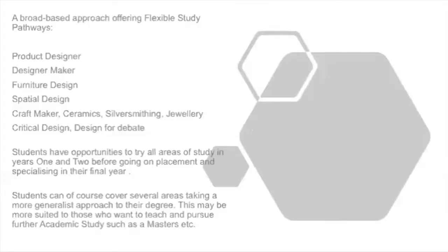The course itself is quite broad-based and we offer a flexible approach to study pathways. You come on the course in first year and you really don't know very much about design, so first year is very much like a foundation. We allow you to experiment with a number of different disciplines through short, quick projects to give you an idea of what area within product design you're really interested in. There are two main strands: traditional product design and industrial design, which moves into things like interaction design.